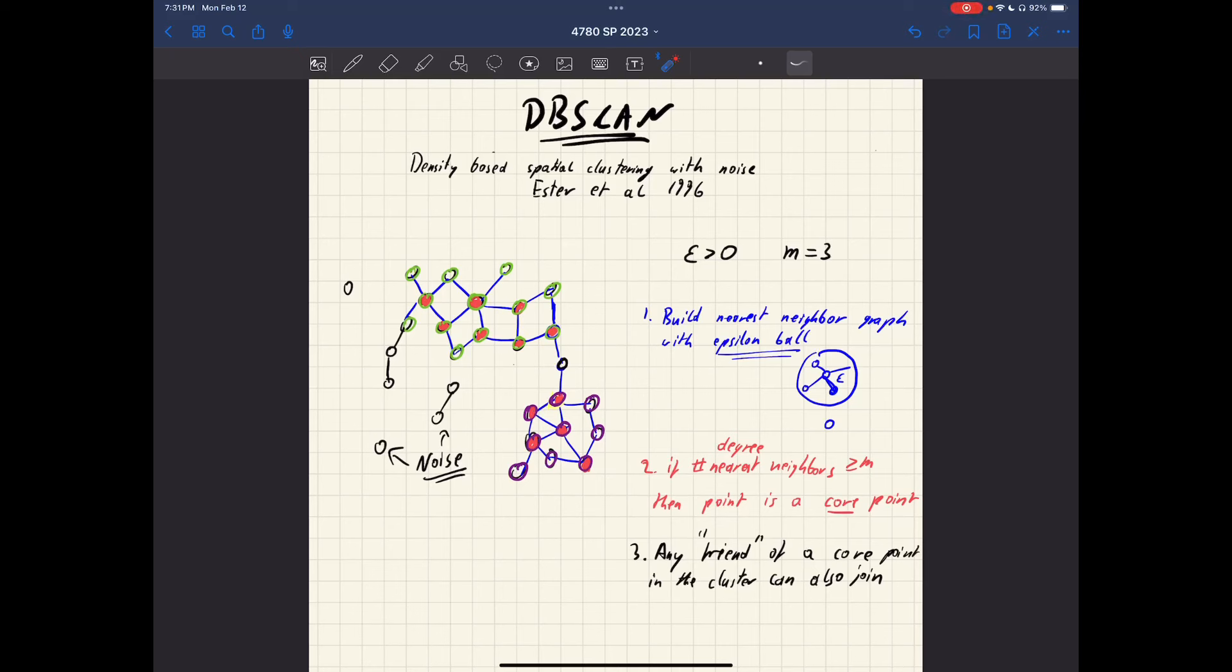Hello, as promised, a short video on dbScan. dbScan stands for Density-Based Spatial Clustering with Noise, and that was invented by Esther Dahl in 1996. dbScan has become my personal favorite clustering algorithm. It is really cool and has many nice advantages over, for example, k-means or Gaussian mixture models.